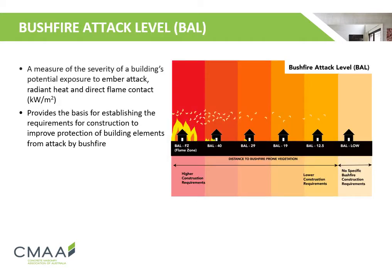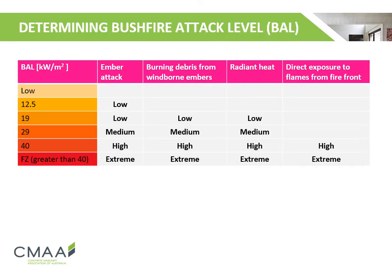The bushfire attack level is a measure of the severity of a building's potential exposure to ember attack, radiant heat and direct flame contact, and is measured in kilowatts per metre squared. It provides the basis for establishing construction requirements to improve protection of building elements from bushfire attack. Here we have a table outlining the different bushfire attack levels, ranging from LOW to FZ.